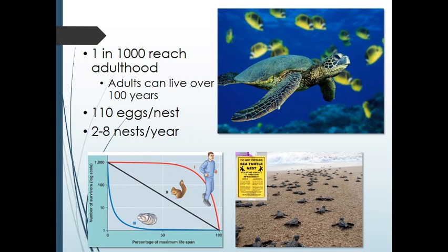It doesn't really matter which species of sea turtle we're talking about — they're all pretty much the same. Only about 1 in 1,000 babies makes it to adulthood. Adults can live over 100 years — Finding Nemo was correct about that. There's an average of about 100 eggs per nest depending on the species, and female sea turtles will have about 2 to 8 nests a year. We know 1 in 1,000 reach adulthood, which right away puts them into the type 3 survivorship curve.